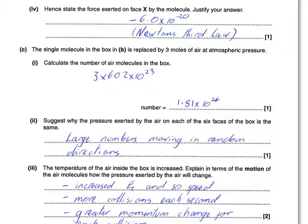Suggest why the pressure exerted by air on each of the six faces of the box is the same. With very large numbers moving randomly, you get statistical evening out. Large numbers was required, and moving in random directions for the second point. Large numbers and random movement means at any instant the number of collisions on each face will be the same.